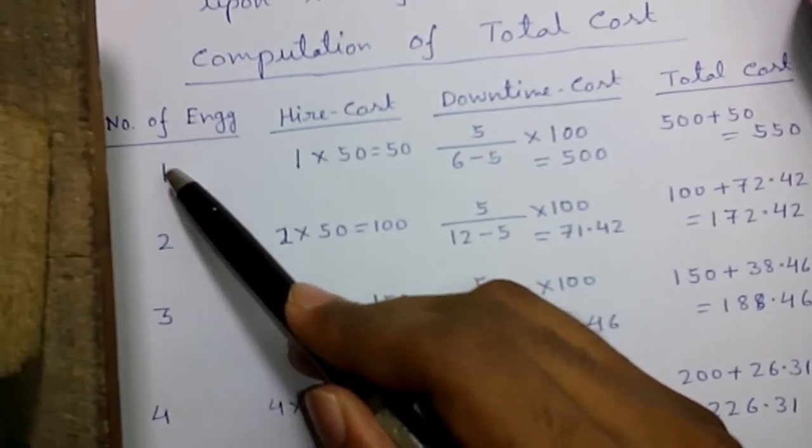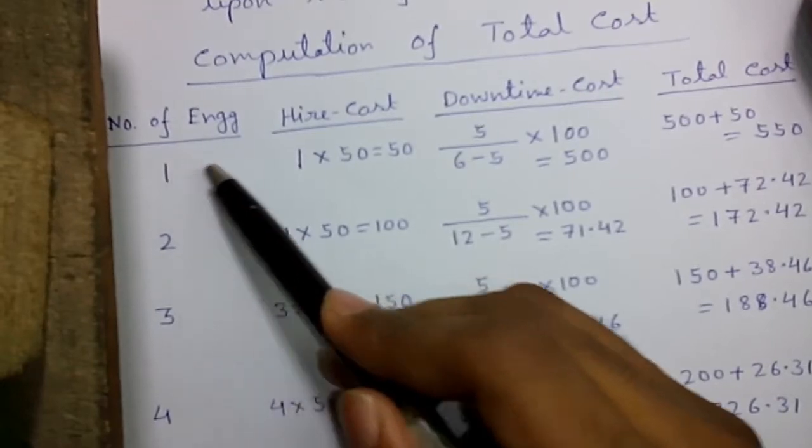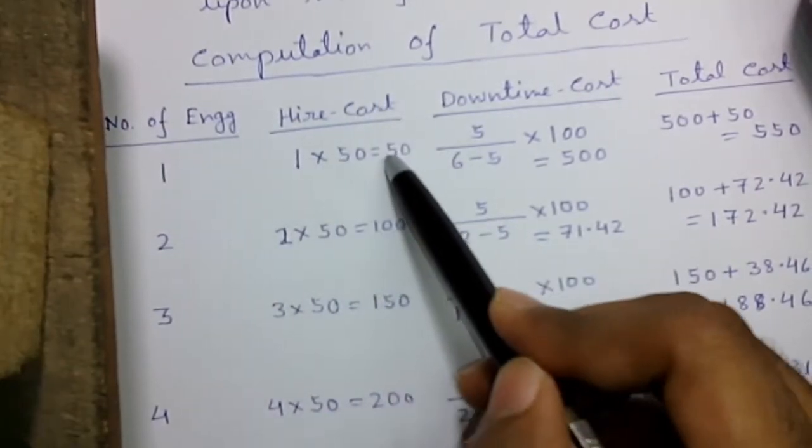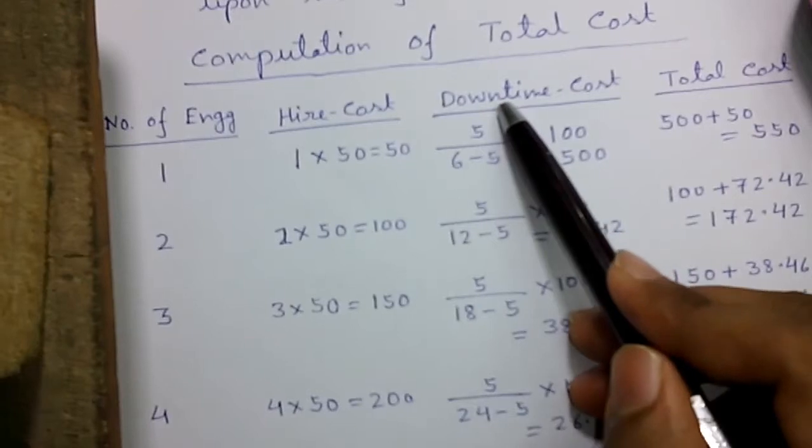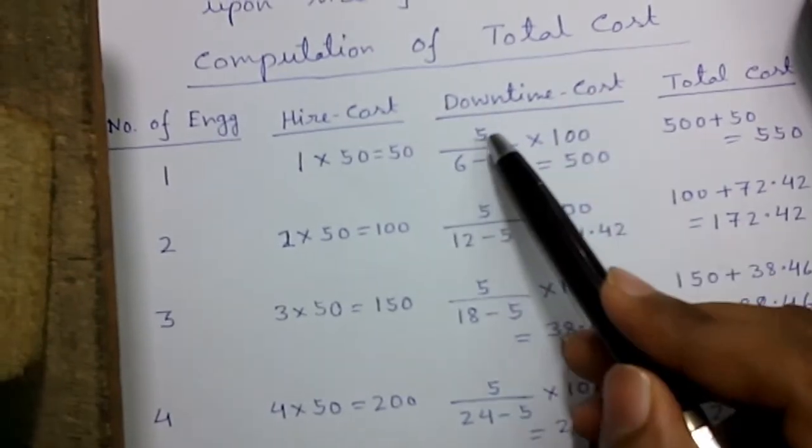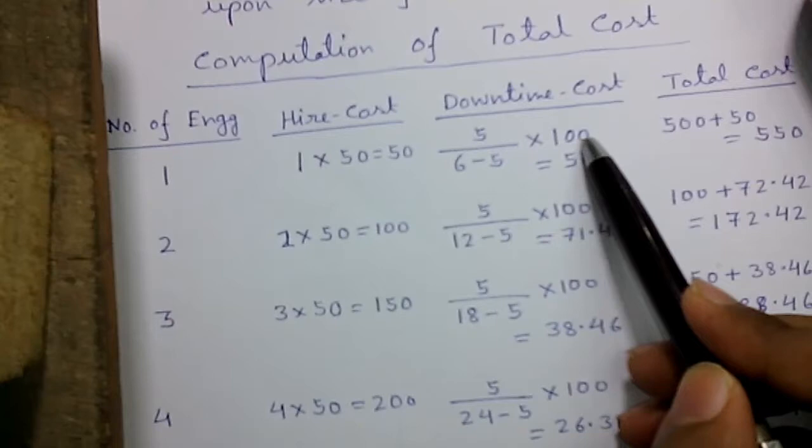Let's start with a single engineer. Number of engineers is 1, hire cost is 1 times 50 which is 50, and downtime cost is equal to 5 divided by 6 minus 5, times 100.